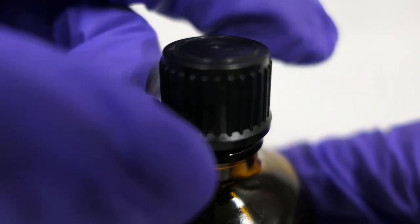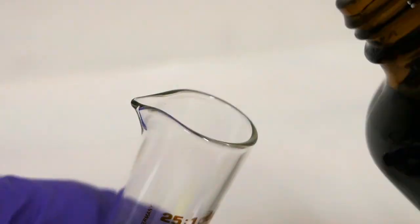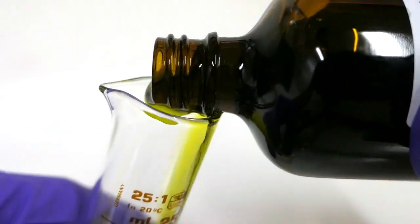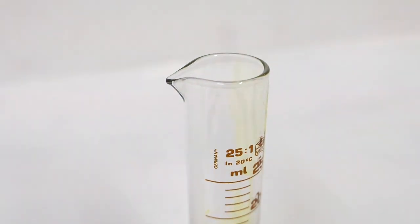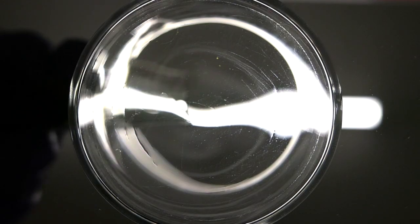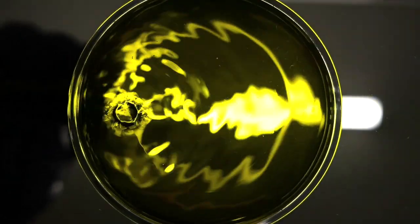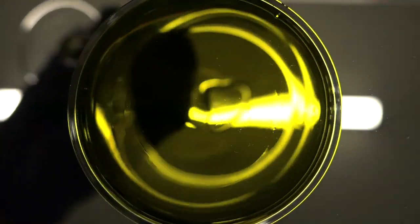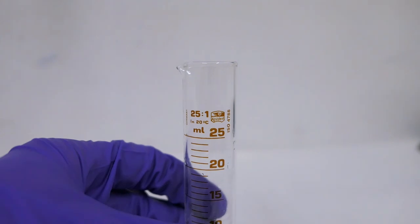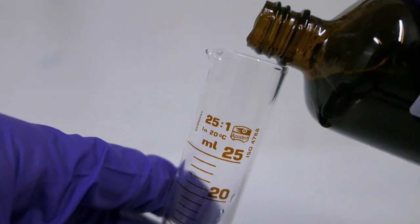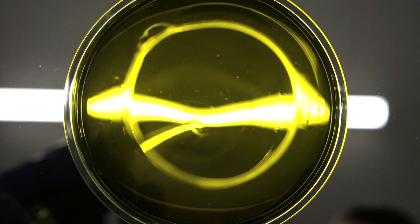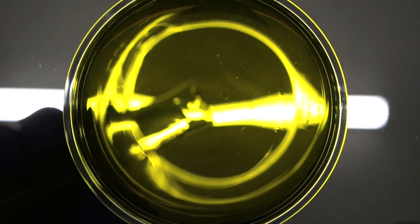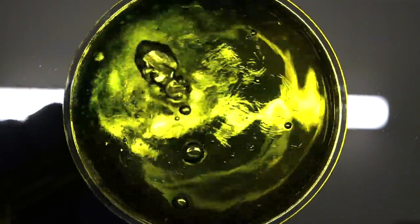The mixture is done in one-to-one ratio. First measure and pour solution A into the mixing jar or a beaker. I am using 10 milliliters. Do the same with solution B. How much solution you will need to coat the paper highly depends on the type of paper and how many layers you're going to coat it with.